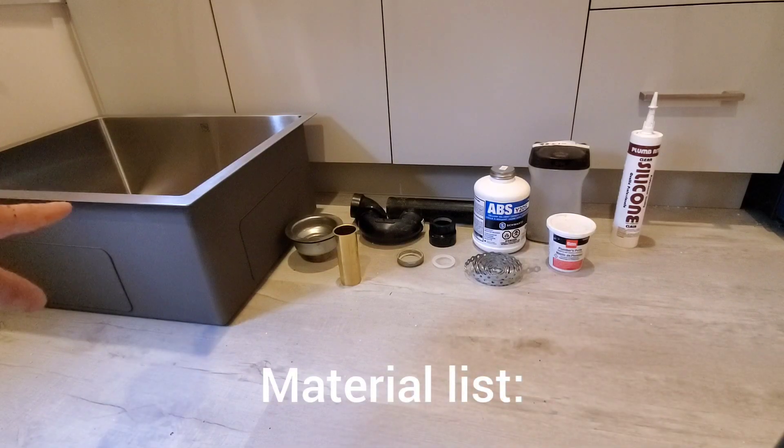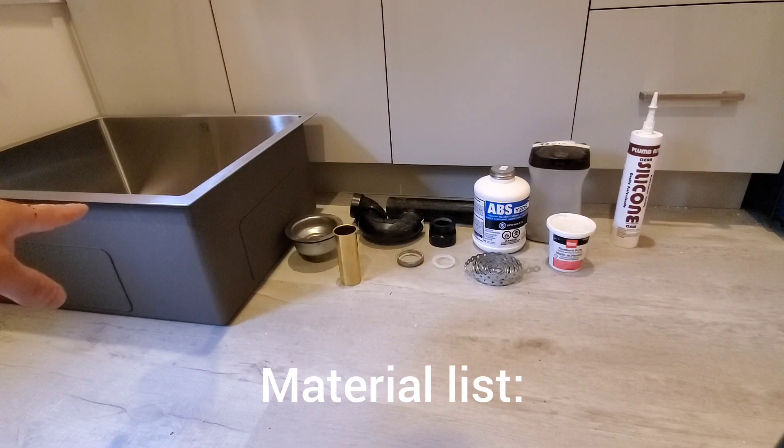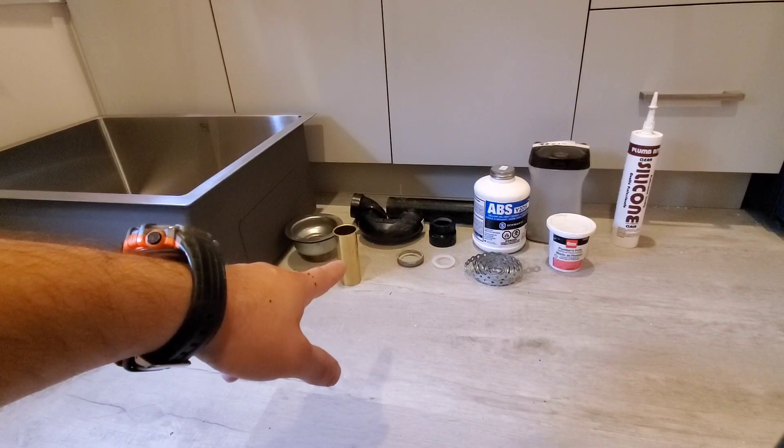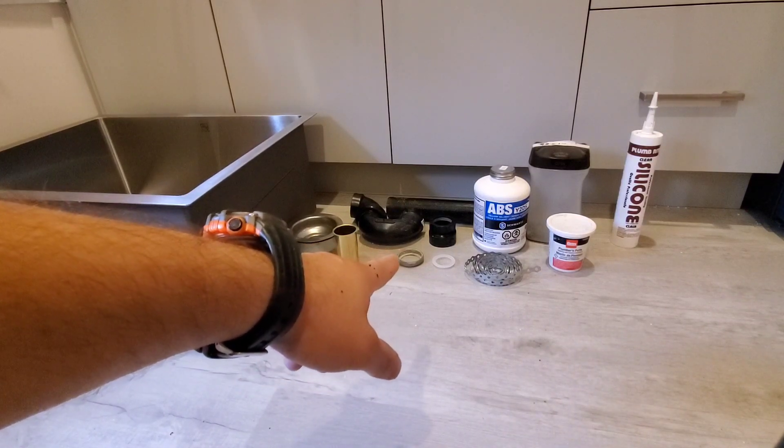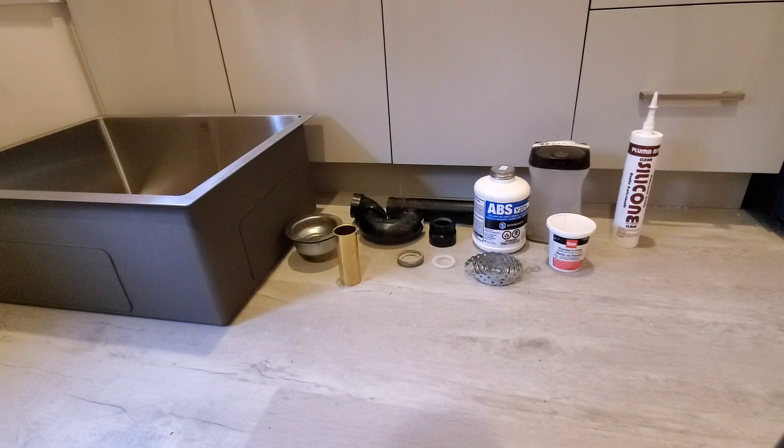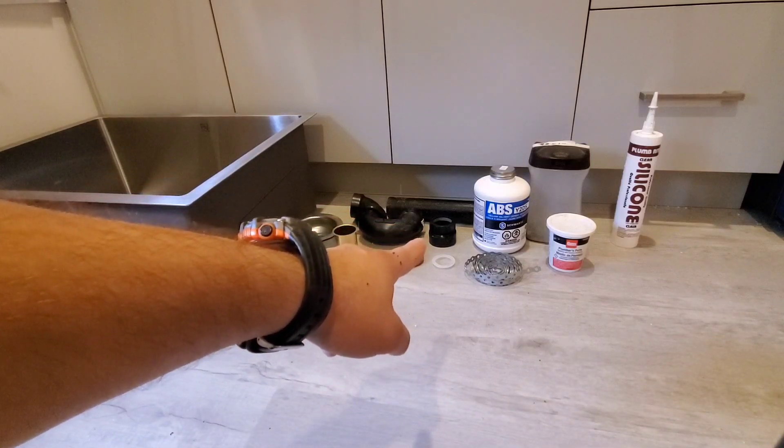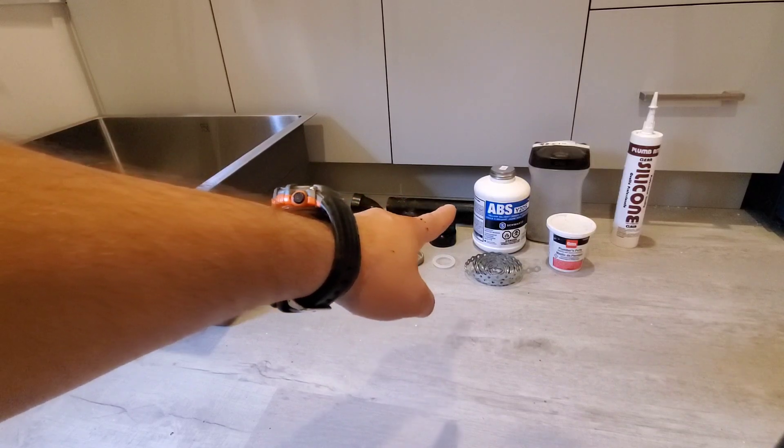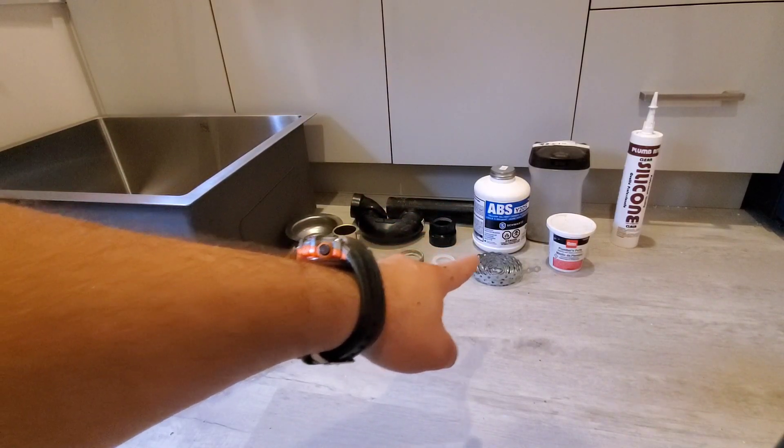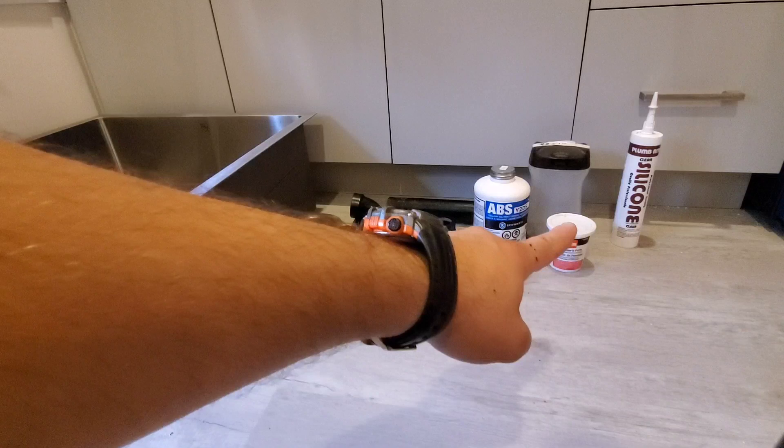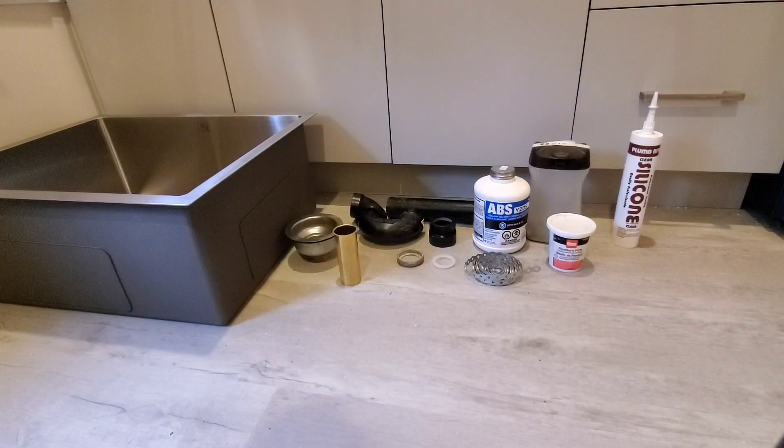This is our materials list. I have a single compartment stainless steel undermount kitchen sink, cup drain, inch and a half brass tailpiece, nut and plastic washer. These two things I had to buy separately for my cup drain. Inch and a half slip adapter, inch and a half union trap, inch and a half pipe, ABS glue, half inch steel strap, plumber's putty, number 8 by 1 inch screws, and clear silicone.